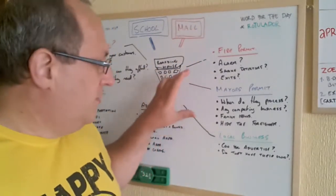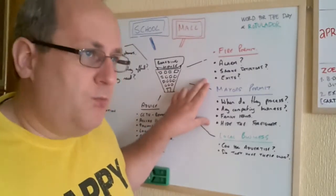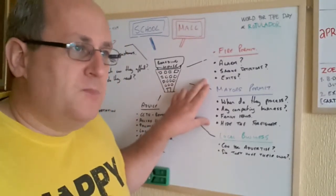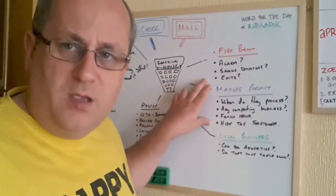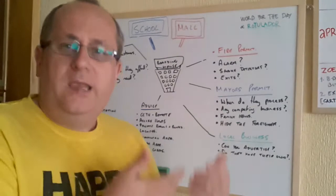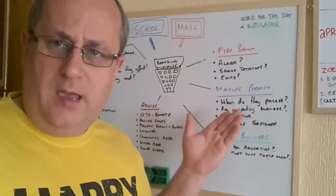Mayor's permit. First thing you're going to need to know is when do they process their documents? When we set up one of our businesses, they weren't processing them for three months. So it says come back in three months' time. Bear in mind, you can't legally operate without the mayor's permit, but they're telling you you can't get a permit for months.